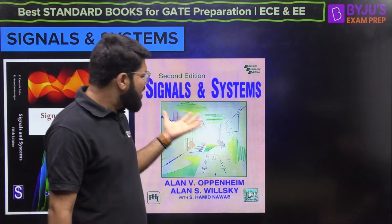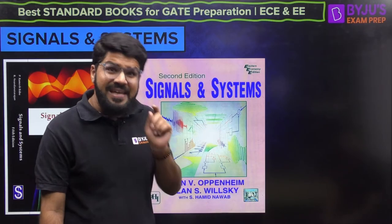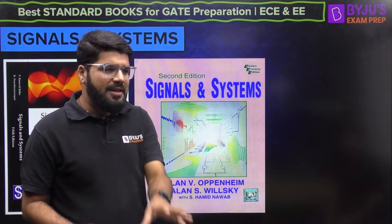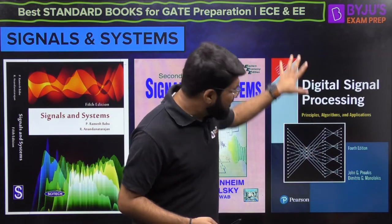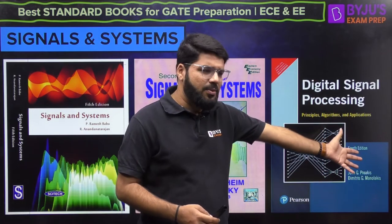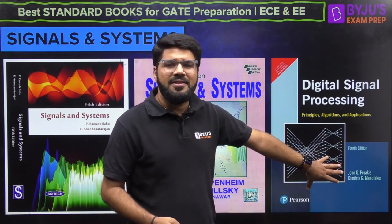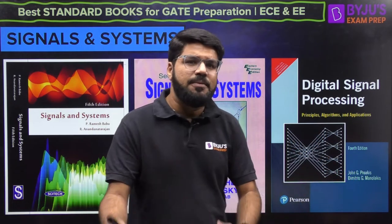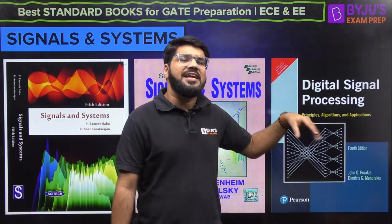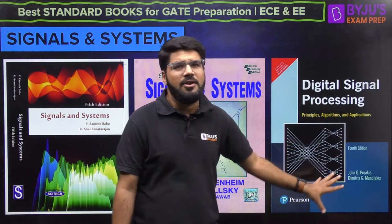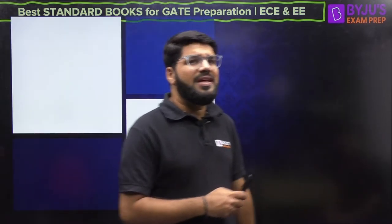Even for understanding, if your basics are strong, depth of understanding is there in Oppenheim. The only thing you will not find in this book is the DFT part with respect to GATE. For DFT, you can go to Ramesh Babu or Proakis — a very good book for DSP. You don't need to read the entire DSP book; discrete time convolution, DTFT, Z-transform are all in Oppenheim. For DFT, FFT, or digital filters needed for Engineering Services or other government exams, you can refer to Proakis.